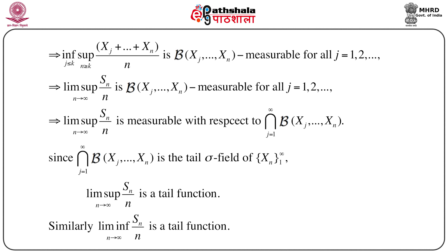Exactly similarly we can show that lim inf of Sn/n is also a tail function. The proof strategy is: first show the function is Borel measurable with respect to many Borel sigma fields, then take the intersection to arrive at the tail sigma field. Since this intersection is also a sigma field, the function is tail sigma field measurable — that is, it is a tail function.